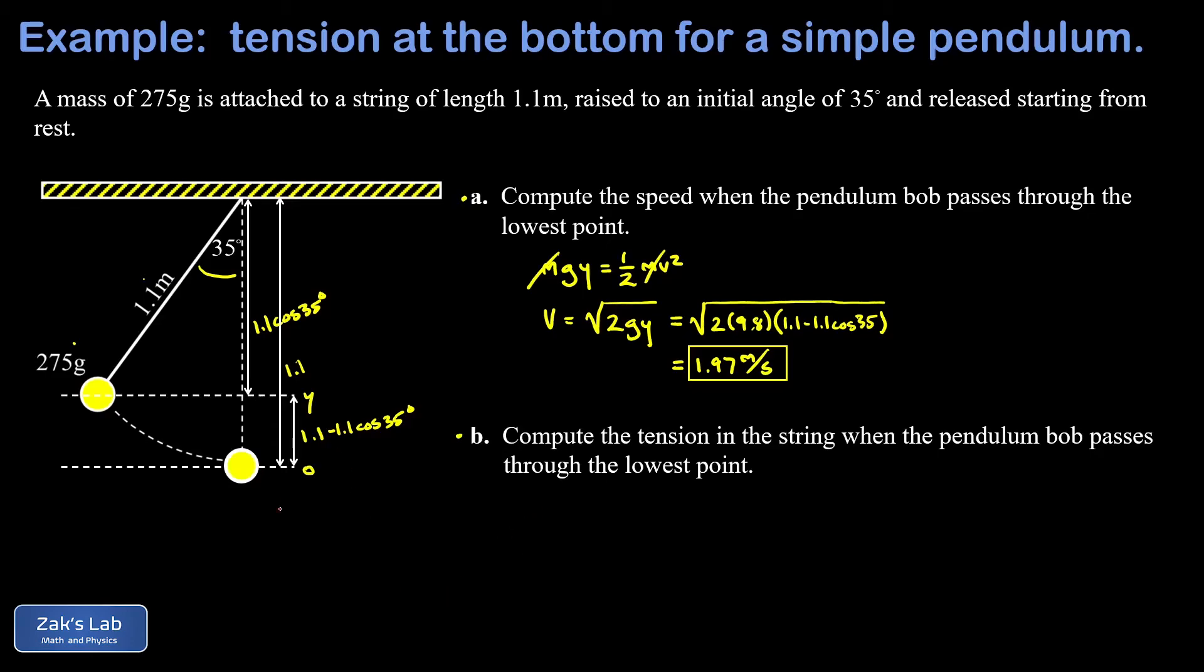Now in part B, we want the tension in the string at that lowest point. So this requires a quick force analysis. And of course, we have gravity pulling down, and then we have the tension in the string pulling up. So there's the force of gravity pulling down, that has a magnitude of mg, and then the tension in the string pulling up with a magnitude of T. Now the reason I made T bigger in the diagram is because I know the acceleration of the pendulum bob is toward the center of curvature here. And that means the net force must point toward the center of curvature, so T must be bigger than mg.